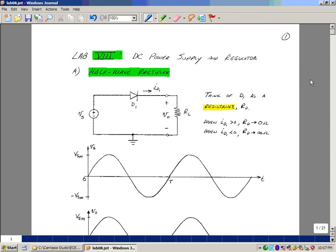Lab number eight is entitled DC power supply and regulator. In this lab we're going to take the AC wall outlet voltage and convert it into a DC source. The way we're going to do this is with a circuit called a half-wave rectifier.